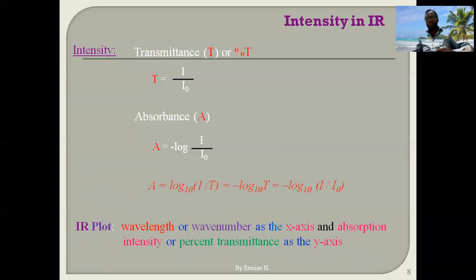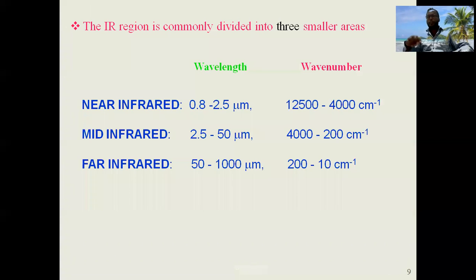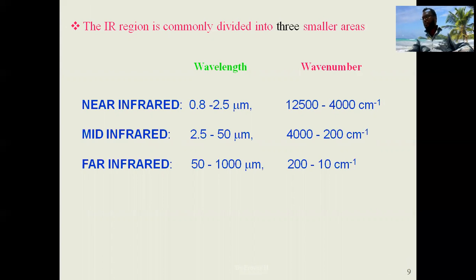To read an IR spectrum, the x-axis shows wavelength or wavenumber, and the y-axis shows intensity expressed as percent transmittance.